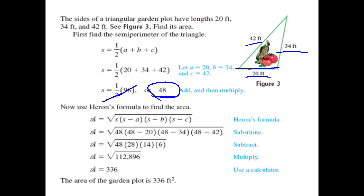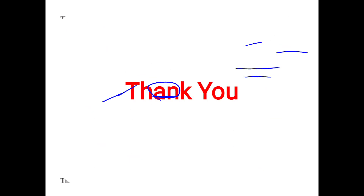Thank you, children. With this we have completed the mensuration chapter. I hope you all understood the mensuration topics: area, perimeter, area of the square, perimeter of the square, area of the triangle, area of the rectangle, area of the rhombus, area of the parallelogram, area of the triangle, and area of the circle. Only the area of the circle remains, and once that is completed, the full mensuration chapter will be done. We will cover that in the next video. Thank you.